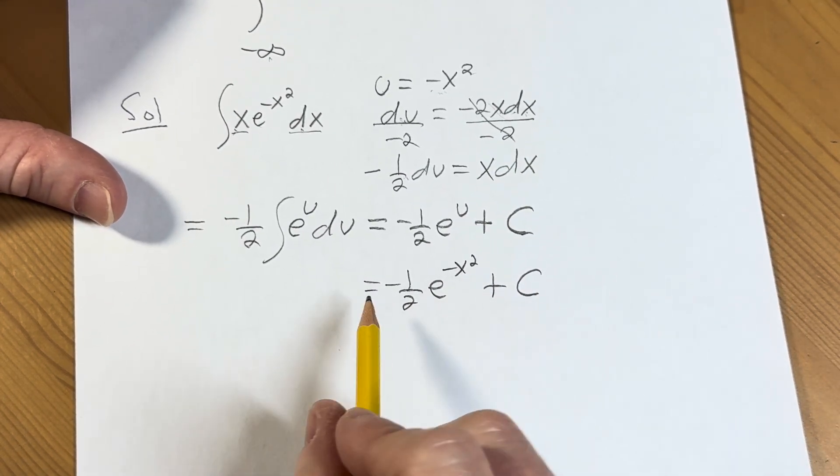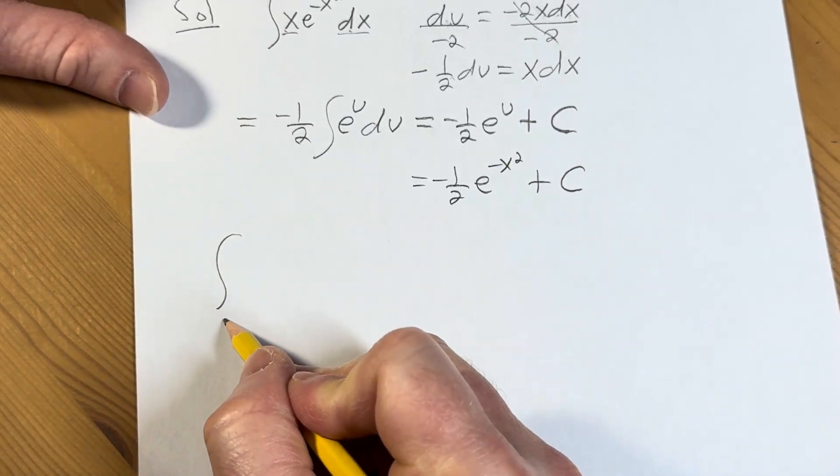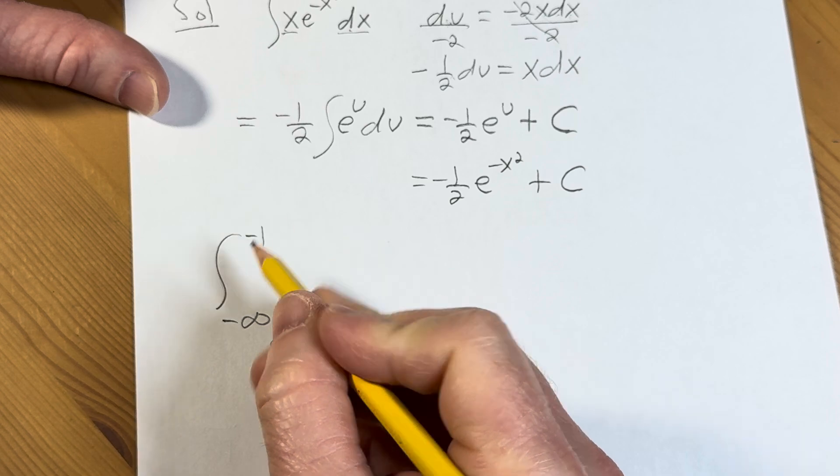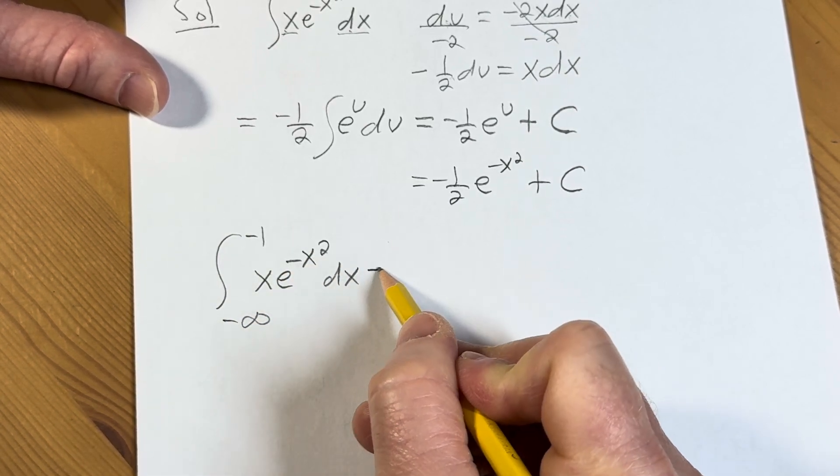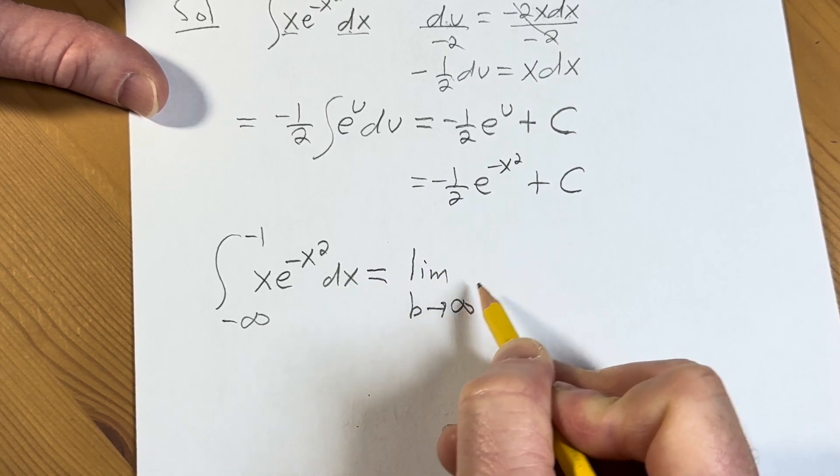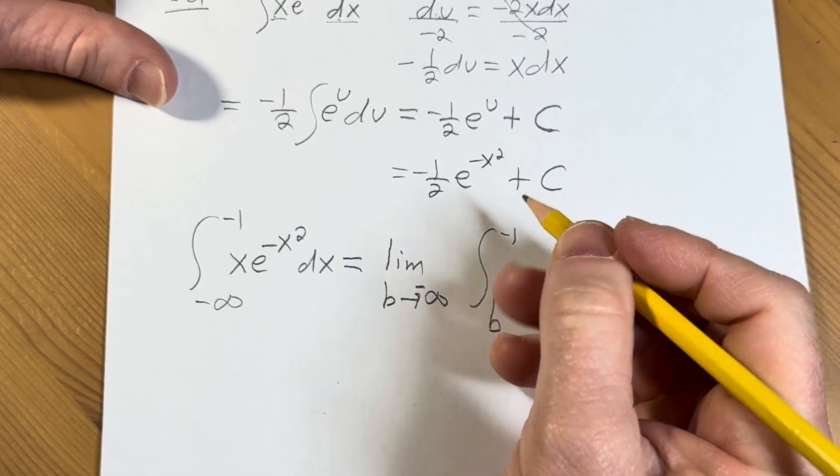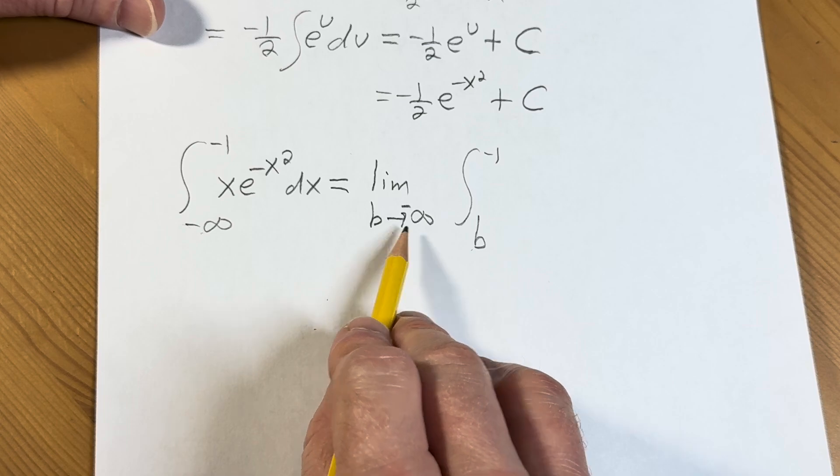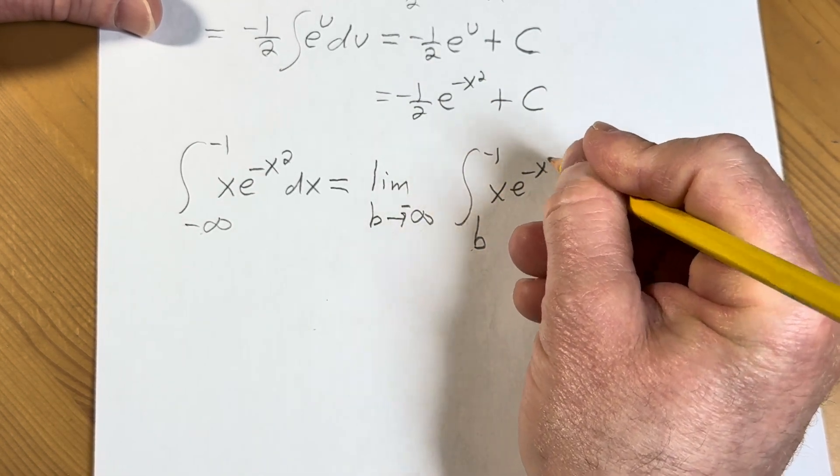So now we're in a good position. This is the answer to the indefinite integral. So let's revisit our original problem, which is the improper integral from negative infinity to negative 1 of x e to the negative x squared dx. This is equal to the limit as b approaches negative infinity from b to negative 1. Right? Because it's negative infinity, so we replace it with b and let b approach that. And here we have x e to the negative x squared dx.